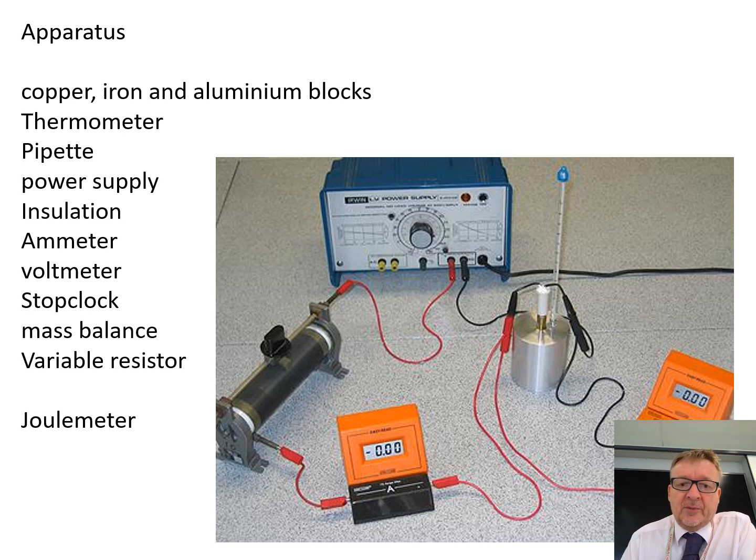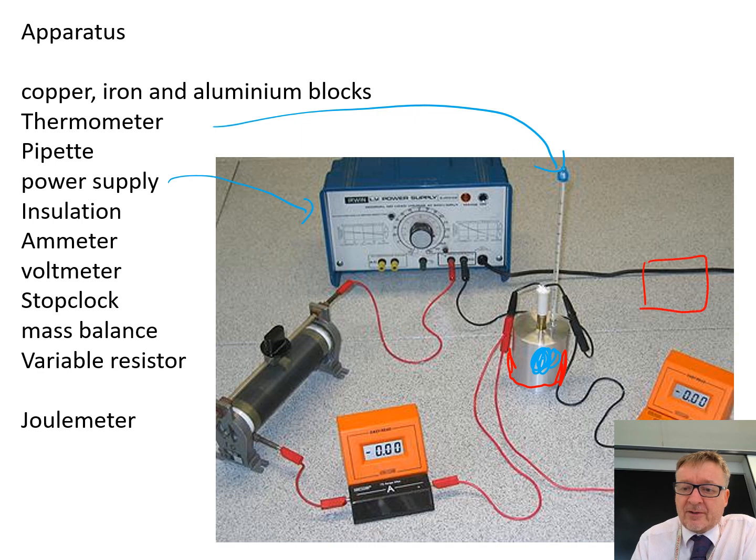Now, the apparatus itself, it can be a little bit complicated, so I'm going to go through it. You have three types of blocks, probably copper, iron, aluminium, so there's your block there, and it's just like a cylinder of metal with a couple of holes in it. You've got a thermometer which is there. You've got a pipette which is then for putting a little tiny bit of oil into the thermometer's hole. You've got a power supply. You should then have insulation around the outside. An ammeter, a voltmeter, stop clock, mass balance for measuring the mass of the metal block. A variable resistor, and if you're really lucky, a joule meter.